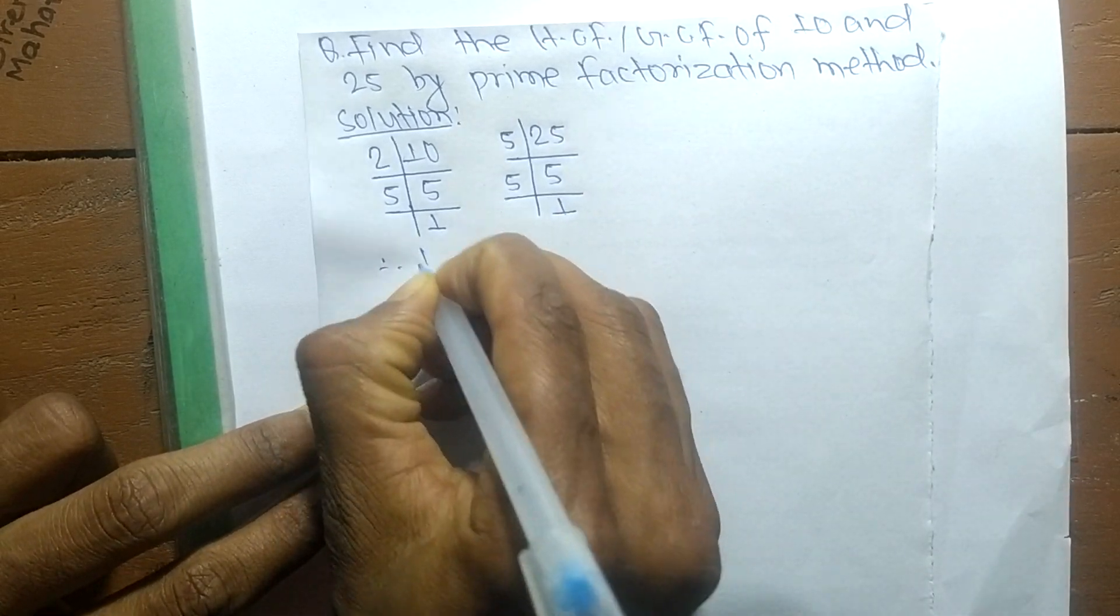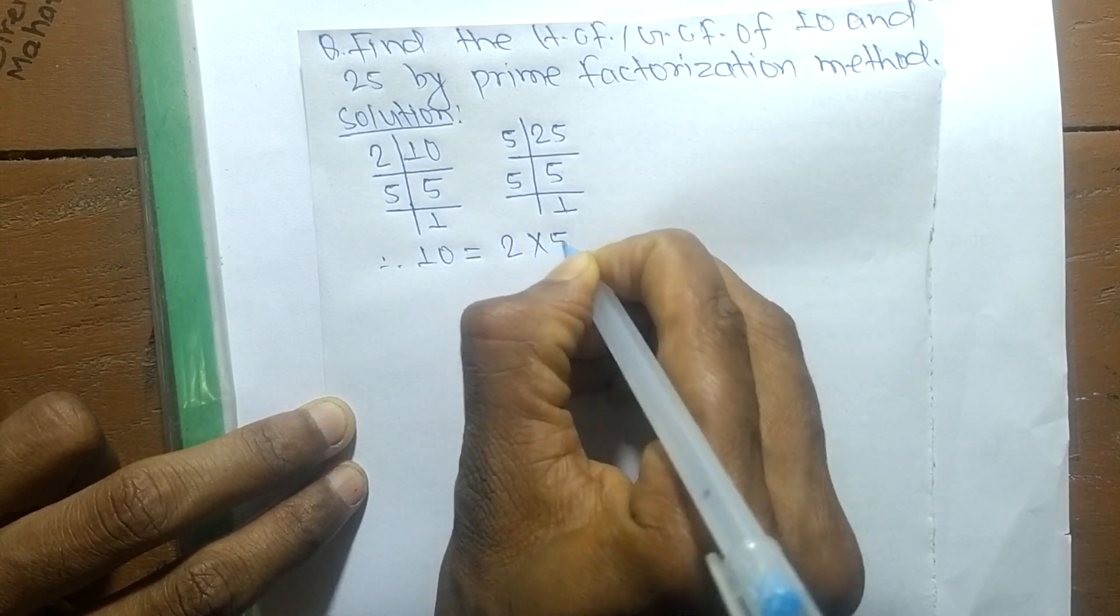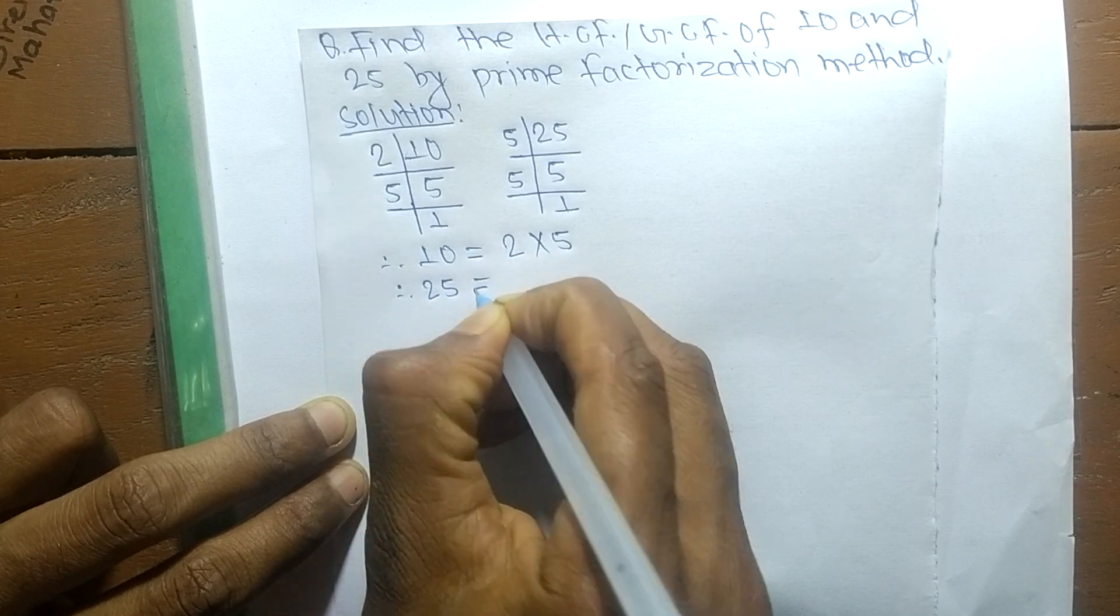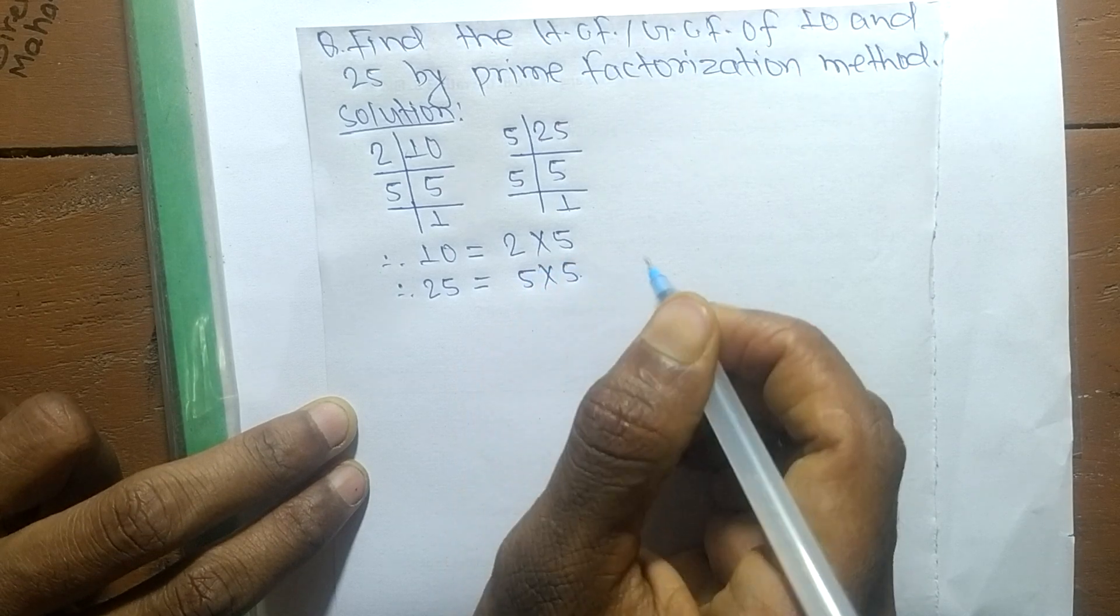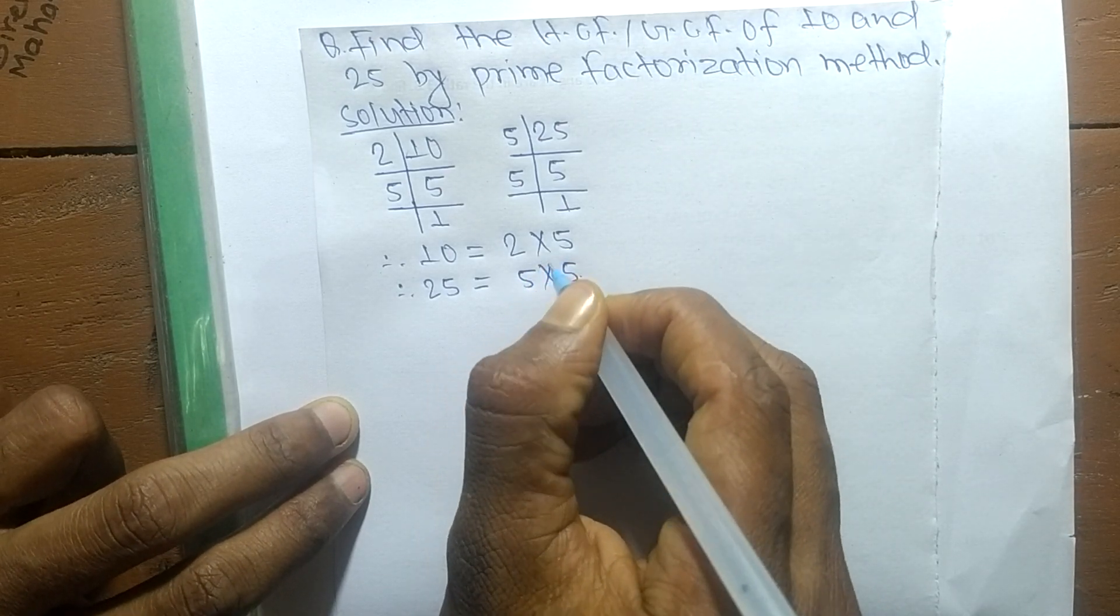So from the prime factors, 10 is equal to 2 into 5, and 25 is equal to 5 into 5. After finding out the prime factors, now we have to find out the common elements in both the prime factors.